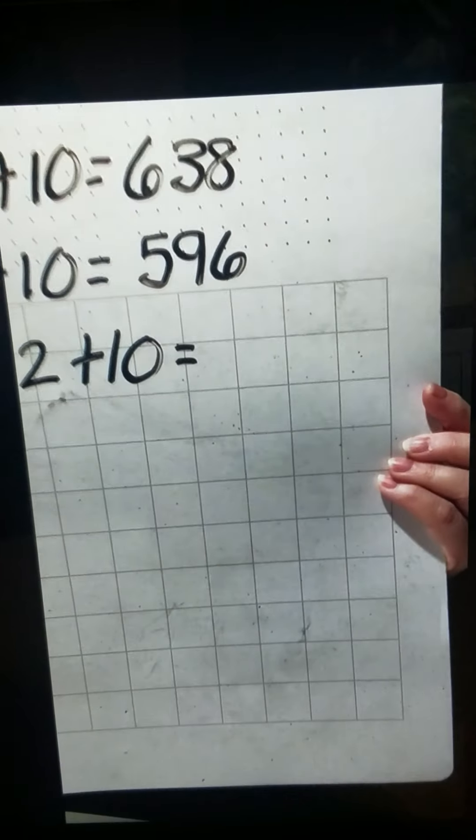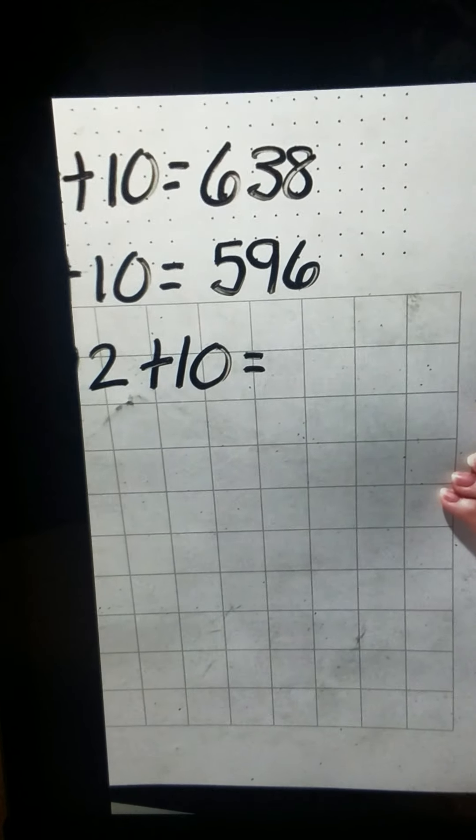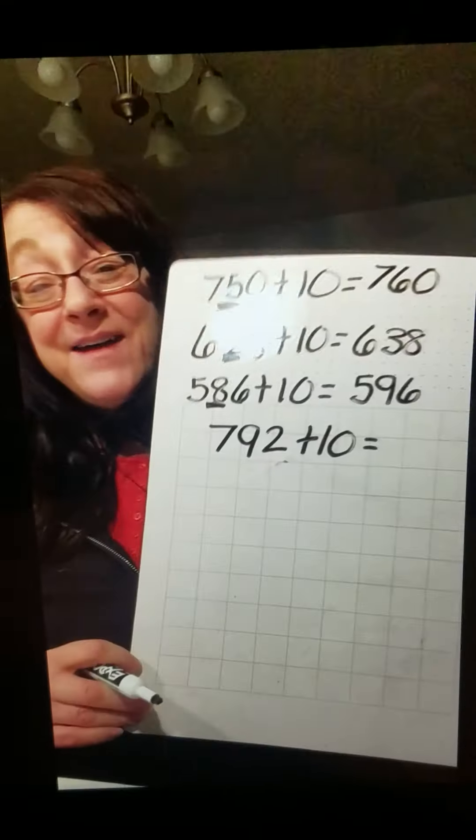So we are going to look, how many groups of 10 do we have in this problem? Well, really, we have 79. We've talked about that before. We have 79 tens, okay, plus the 2.